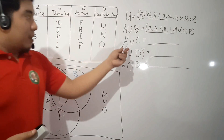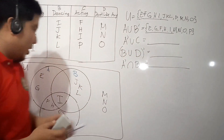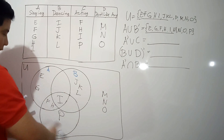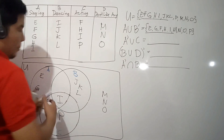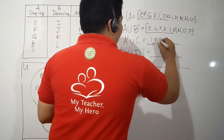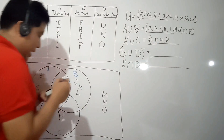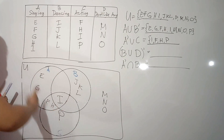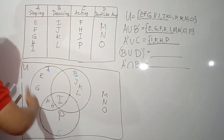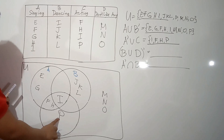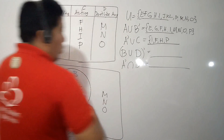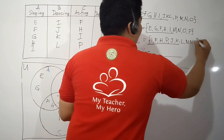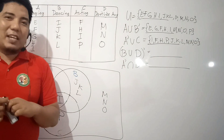Now let us find the complement of A union C. Our C contains I, F, H, and P. The complement of A means elements outside of A. Since P is already written, we only add J, K, L, M, N, and O. So the complete answer is I, F, H, P, J, K, L, M, N, and O.